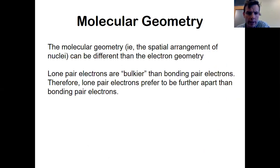The molecular geometry can be different than the electron geometry. I'm not going to go into this. You can read about it in your textbook if you want. There are slight deviations from ideal geometry because lone pair electrons are bulkier than bonding pair electrons. And so you often have to figure out where they're going to go. You want to stick bonding electrons as far apart as possible.